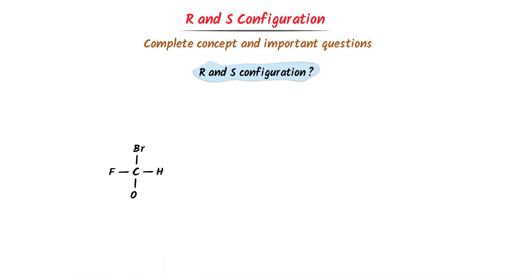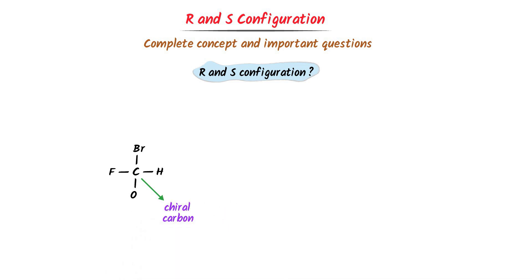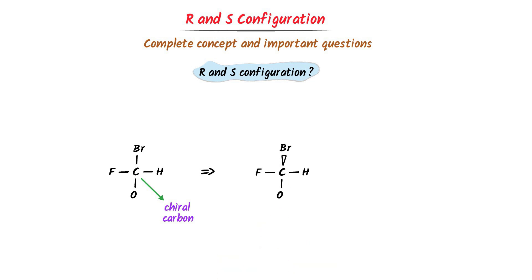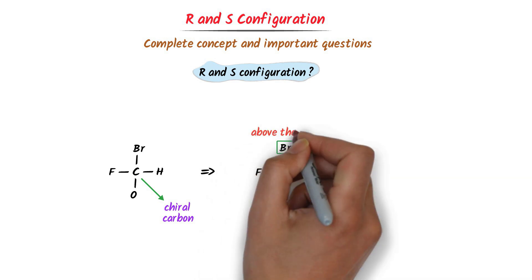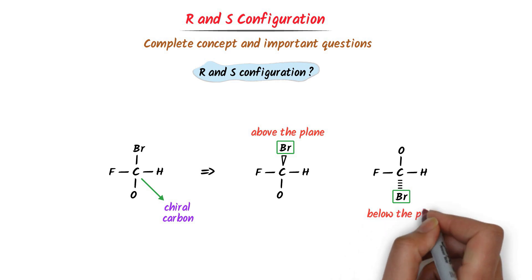Let us consider the structure of this organic compound. We know that this is a chiral carbon because there are four different groups present around it. Now in 3D, there are two possibilities of this structure. In the first case, there is a possibility that bromine is present above the plane, while in the second case, bromine is present below the plane.